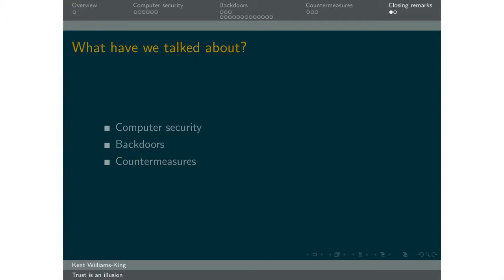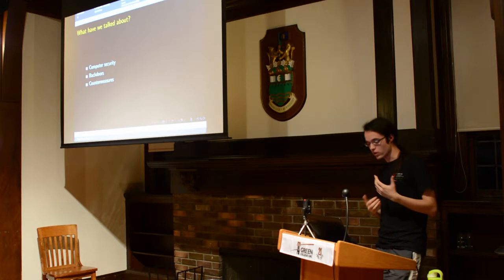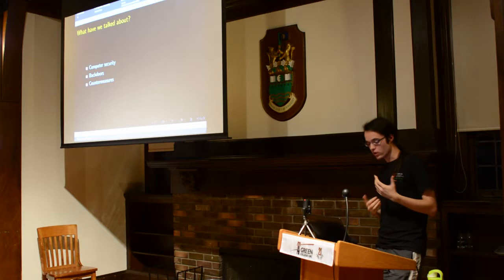To summarize: we've talked about computer security and what it is, given a general overview of different types of flaws and why they matter, walked through several backdoor examples and how they work, and briefly discussed some countermeasures and what they're doing. And with that, I'm done — are there any questions?